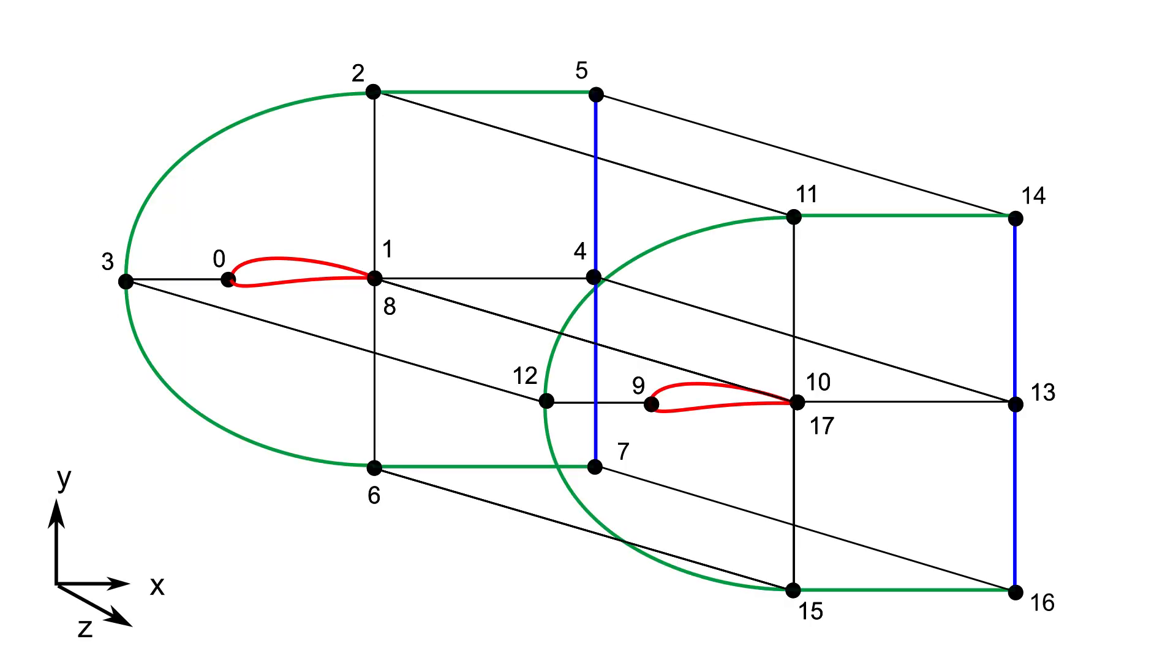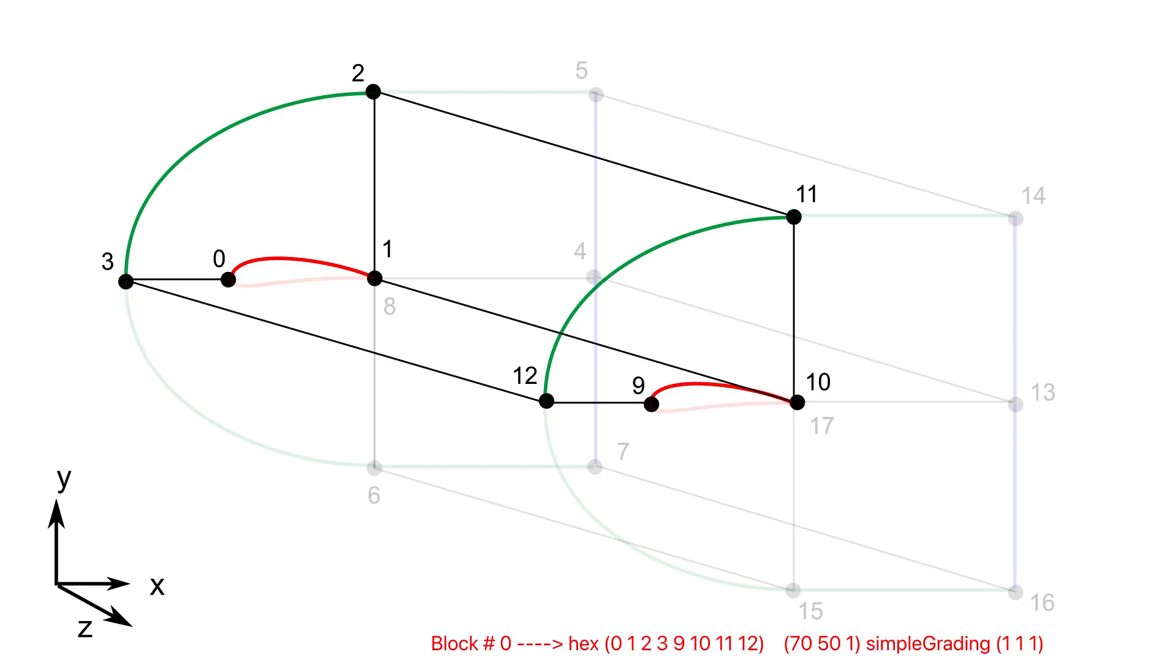Now we have four 3D blocks and each block can be defined using the eight vertices. Let's go through how to define each block in the blockMeshDict file and assign the required number of elements inside each block to control the mesh resolution. So let's start with block zero. It has eight vertices beginning from the lower left corner and moving counterclockwise. So it is defined as a hex block with the vertices 0 1 2 3 8 10 11 12. Remember, using a counterclockwise order is important to keep the block orientation correct and avoid errors in the mesh generation. For this block we will use 70 elements in the x-direction, 50 elements in the y-direction and just one cell in z-direction with simple grading of 1 1 1 to keep all mesh uniform with equal distance between elements.